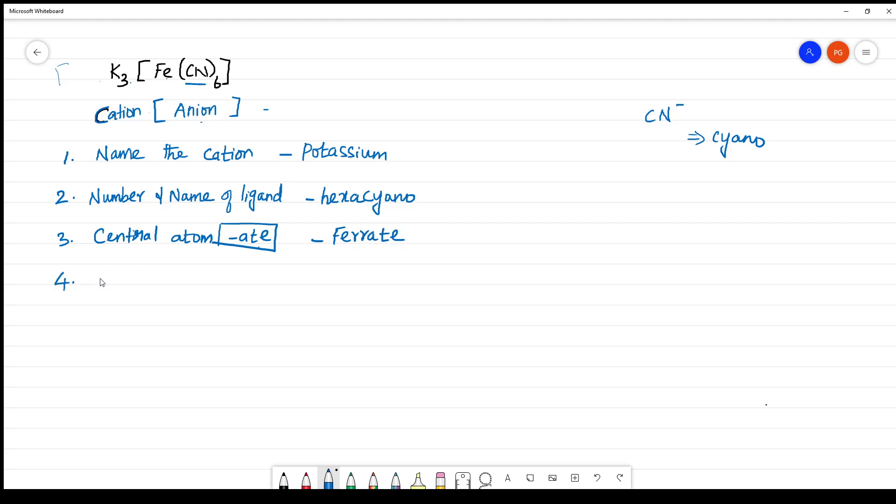Now calculate the oxidation state of the central metal atom. So what is the oxidation state? What is the oxidation number? Here, let us take K. K is 3K, so the oxidation state is +1, +3. Let us take X and cyano 6. It is only a monodentate ligand, only one donating site, which is -1. It is a negative ligand. It is 0. So 3 + X - 6 = 0. X - 3 = 0. X = 3.